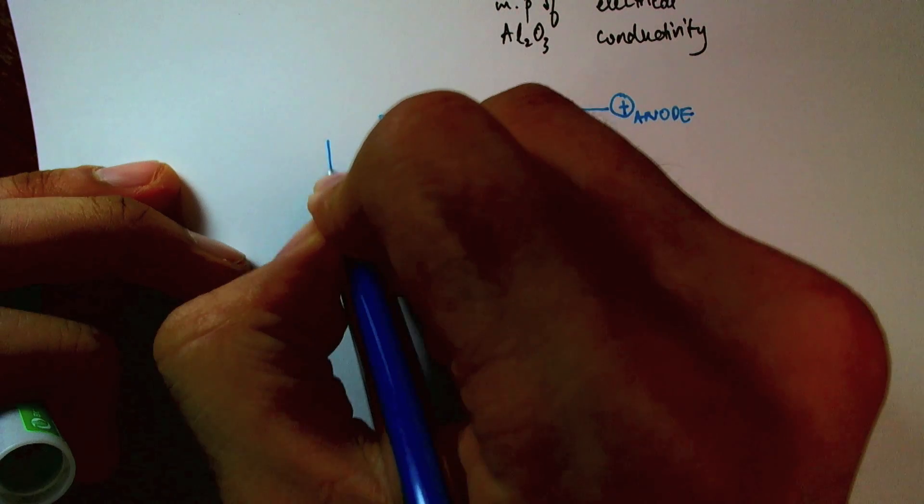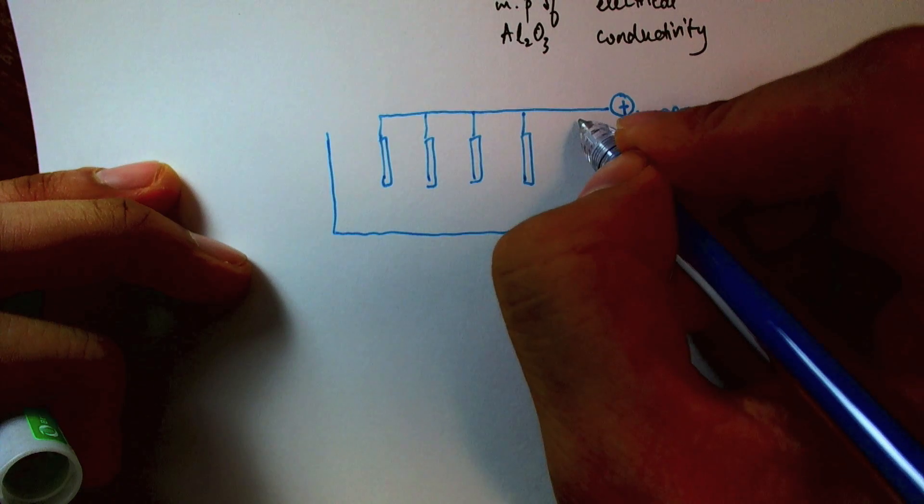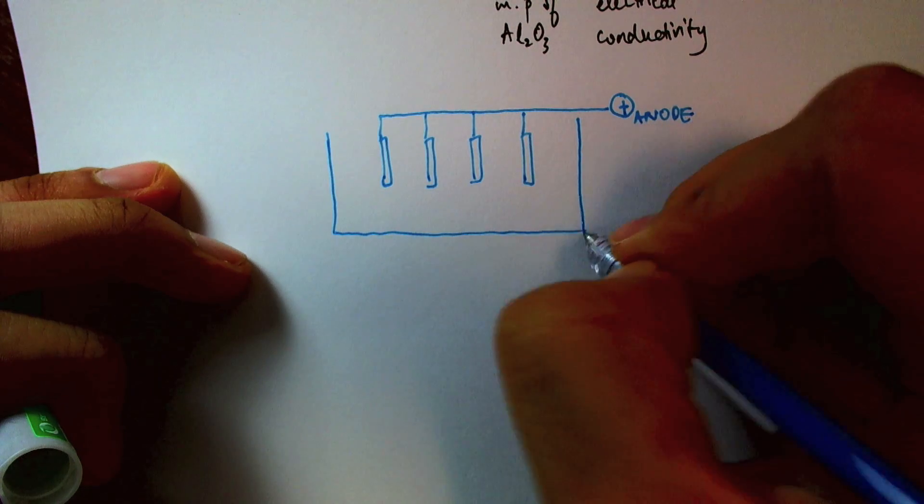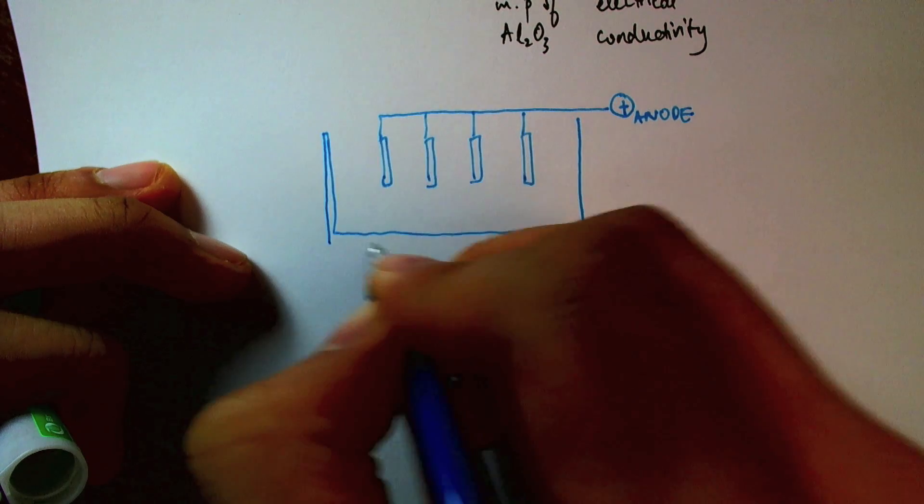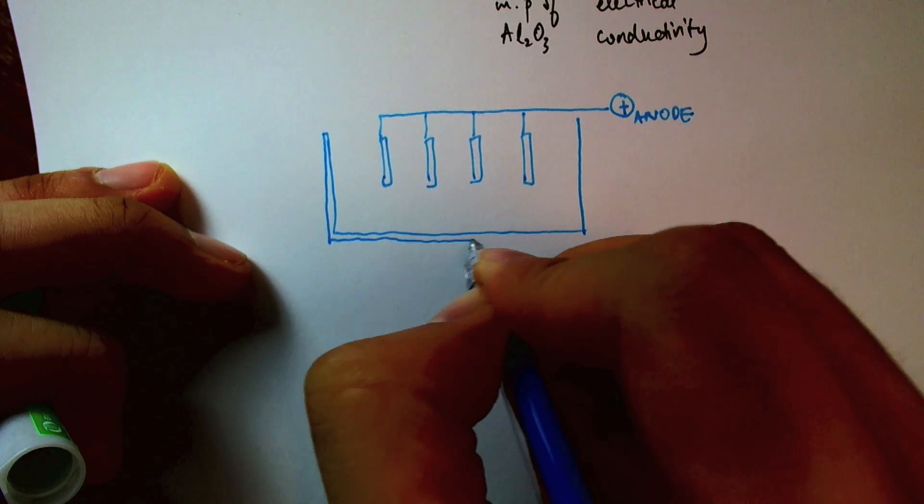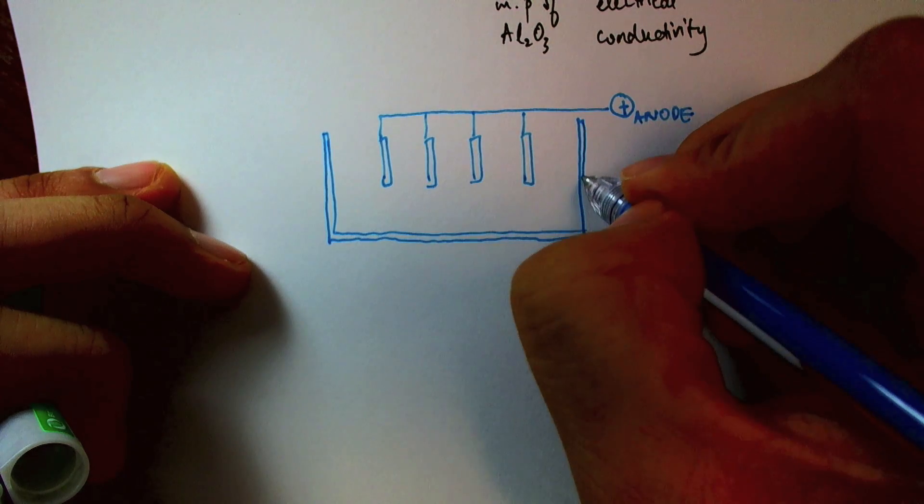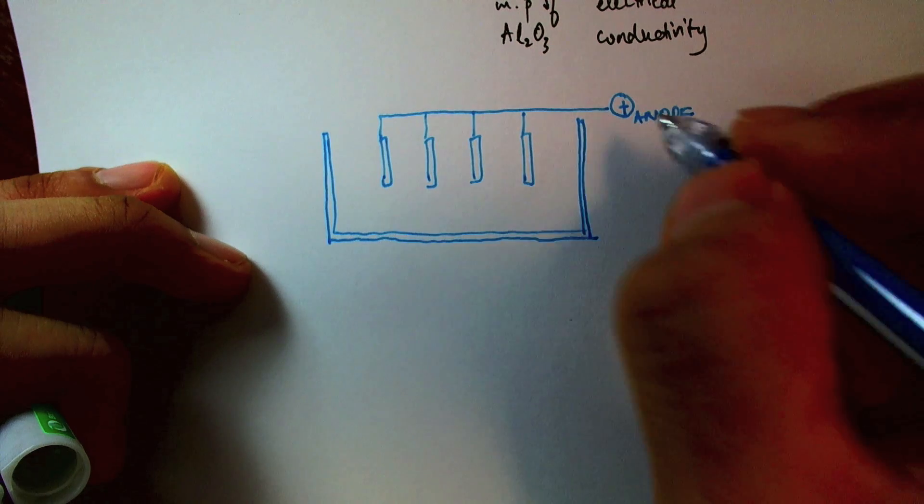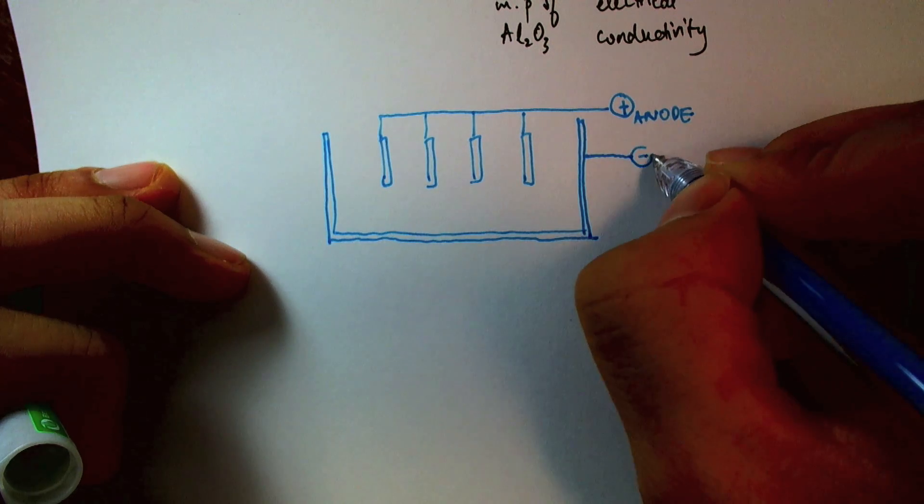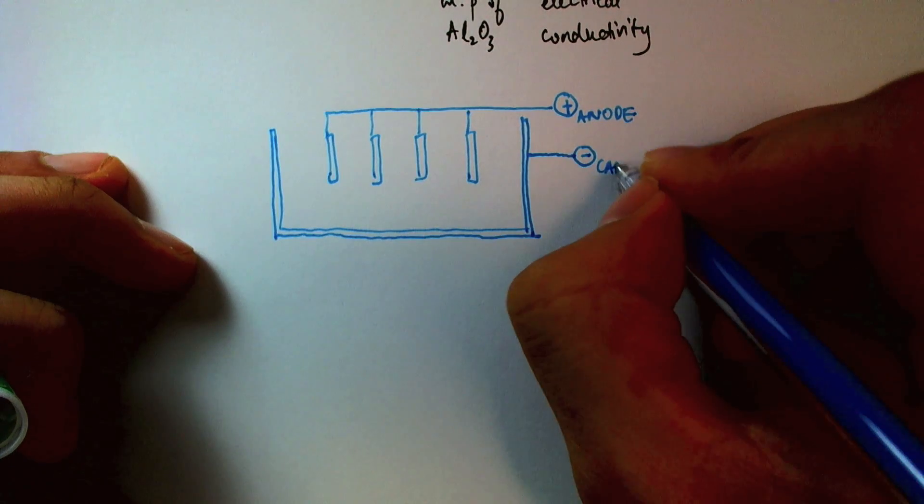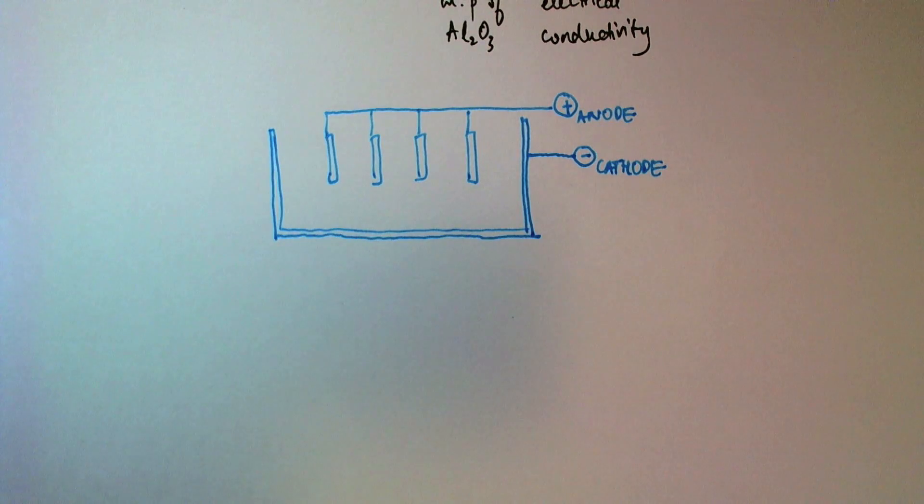And then I'll have a setup at the bottom. So this setup is slightly different to what we're familiar with, but as we'll see in a minute why we're using this setup. So I then have my negative electrode, the cathode, at the bottom of the tank.